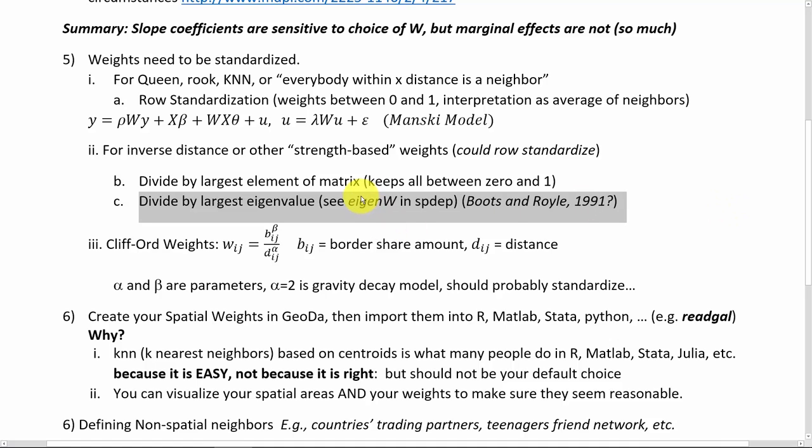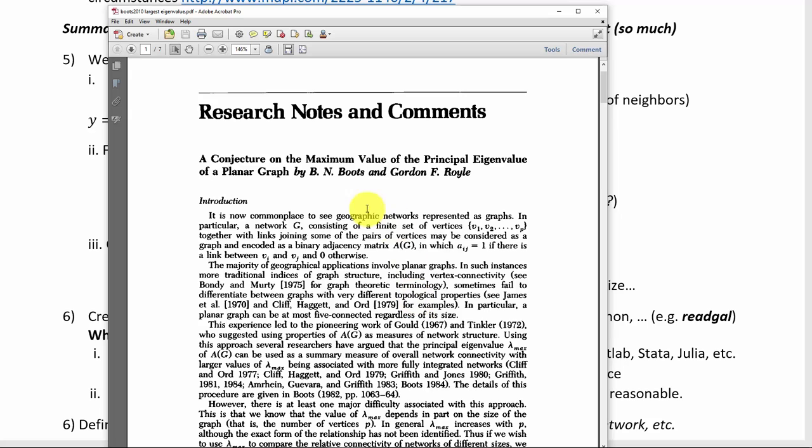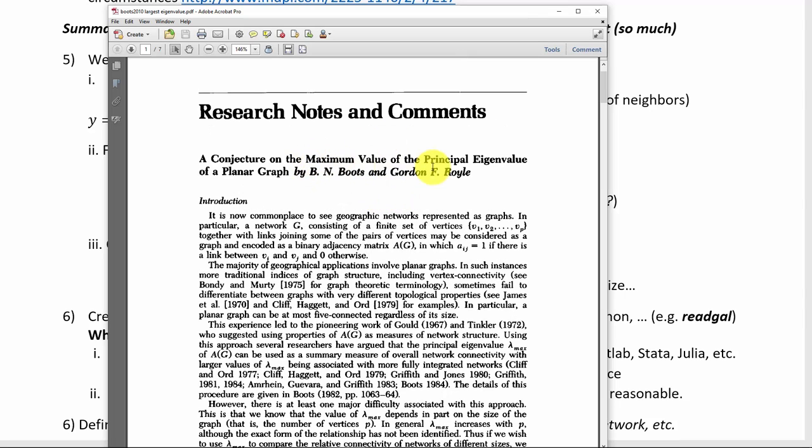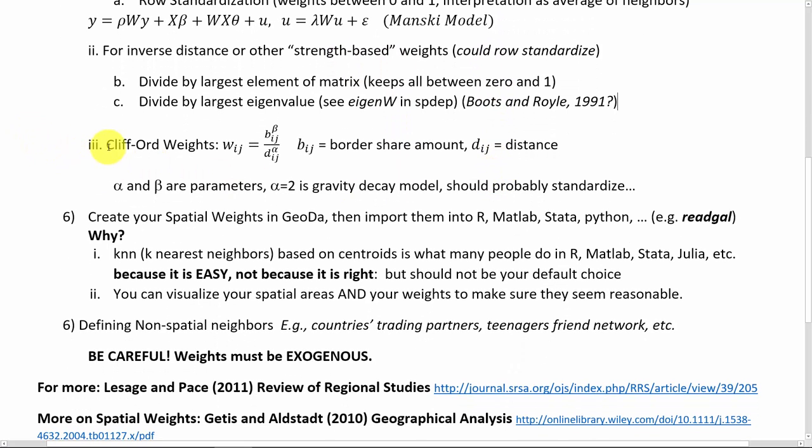Another interesting suggestion is to divide by the largest eigenvalue. In R, there's a function in the spdep library called eigenW. I've heard this suggestion mentioned in several articles and several books. I've never seen a really good explanation of why this is. Here's a paper that I'm reading right now to explore this - it's by Boots and Royle, citation is Geographical Analysis 1991, Volume 23, Number 3. This paper goes through using the maximum eigenvalue as a way to standardize weights matrices. I haven't quite gotten into the meat of this, but that's another way people have suggested standardizing, especially these distance based weight matrices.